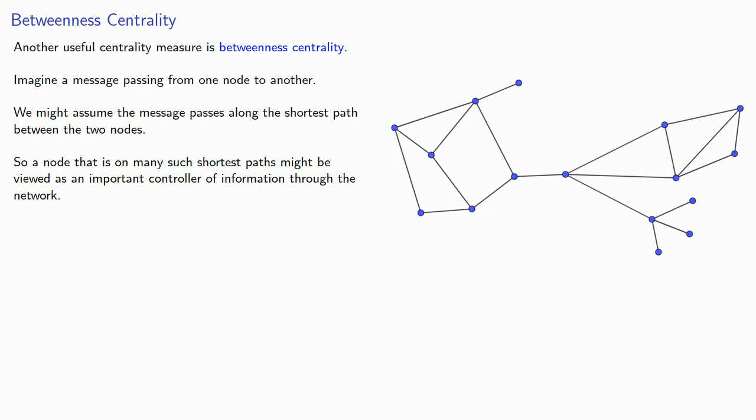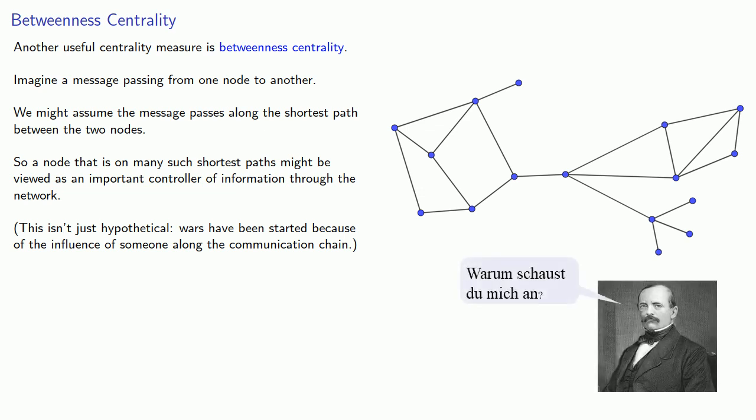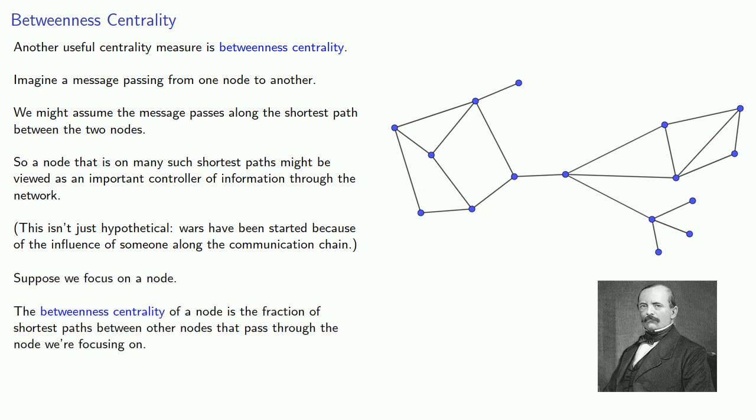It's worth pointing out this isn't just hypothetical. Wars have started because of the influence of someone along the communication chain. So suppose we focus on a node. The betweenness centrality of a node is the fraction of shortest paths between the other nodes that pass through the node we're focusing on.